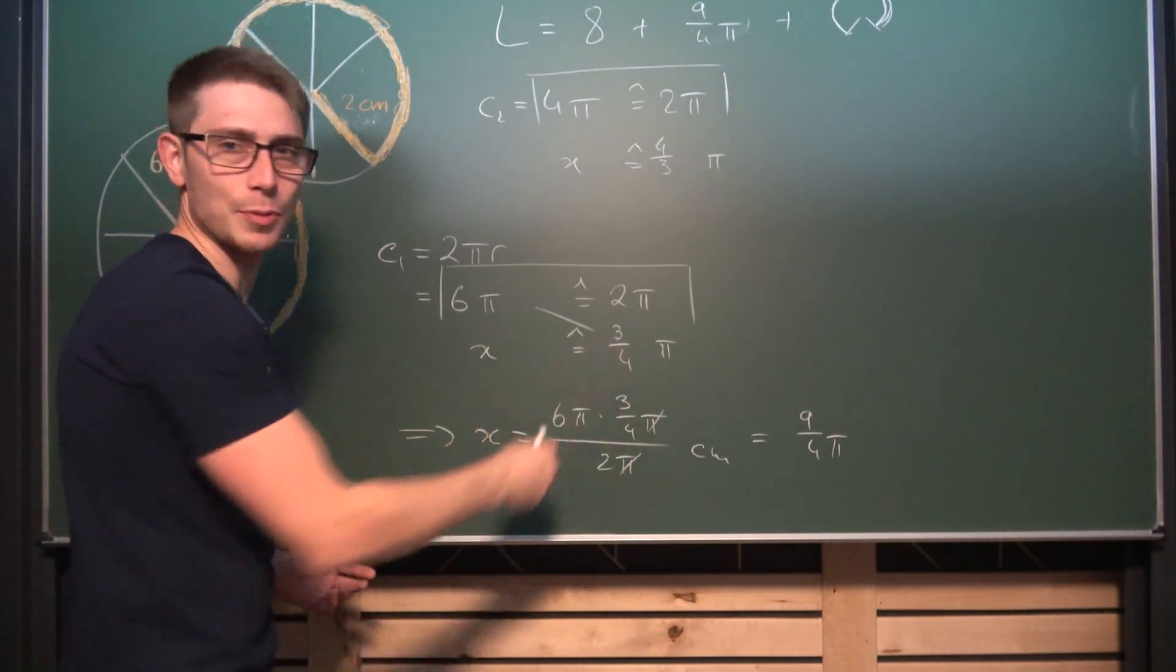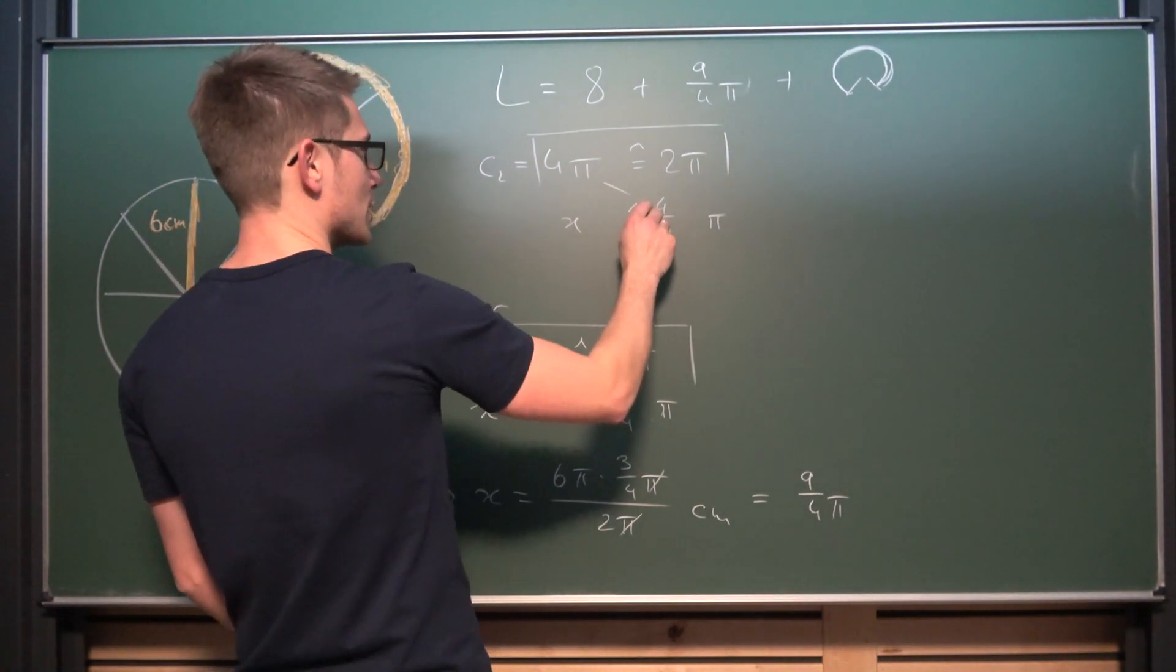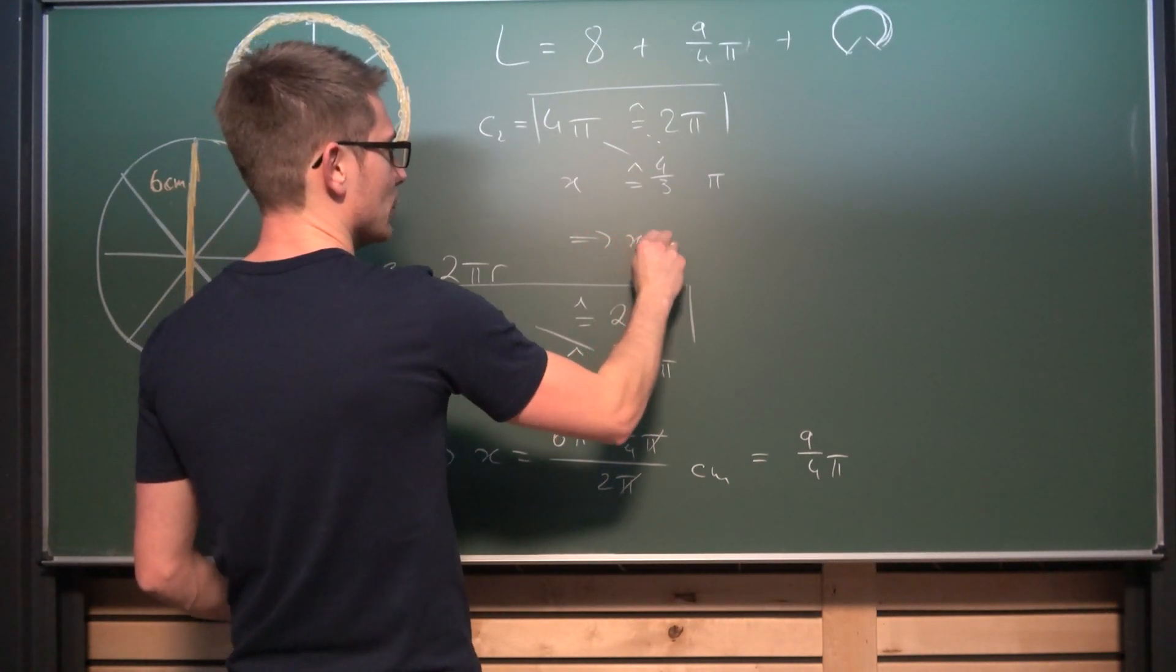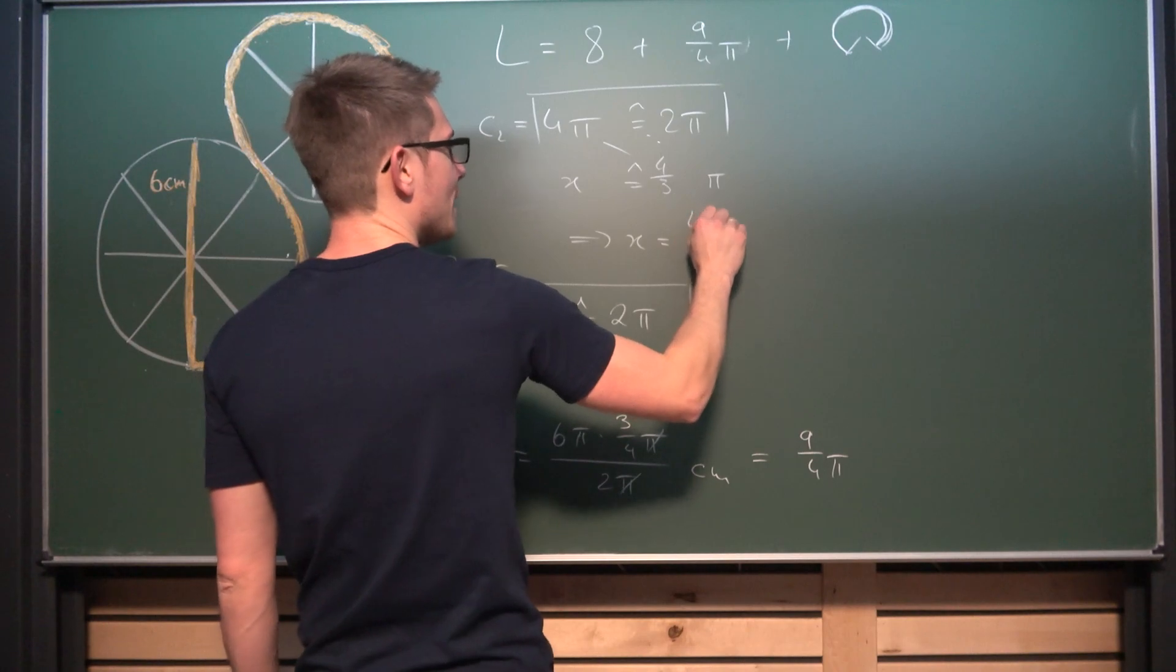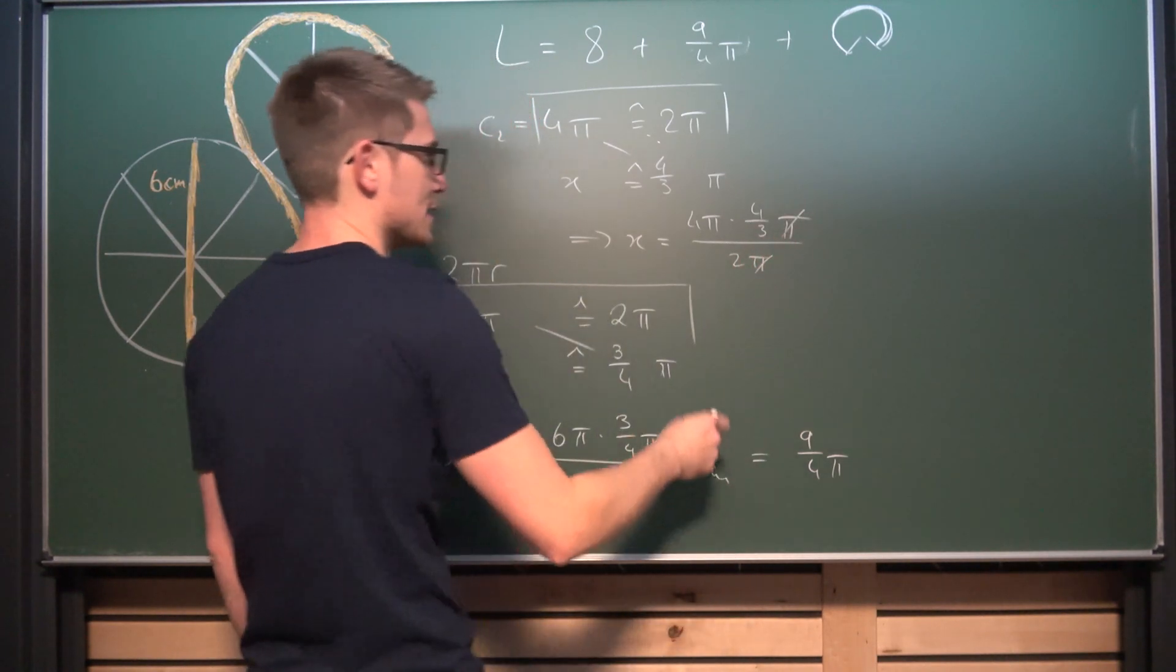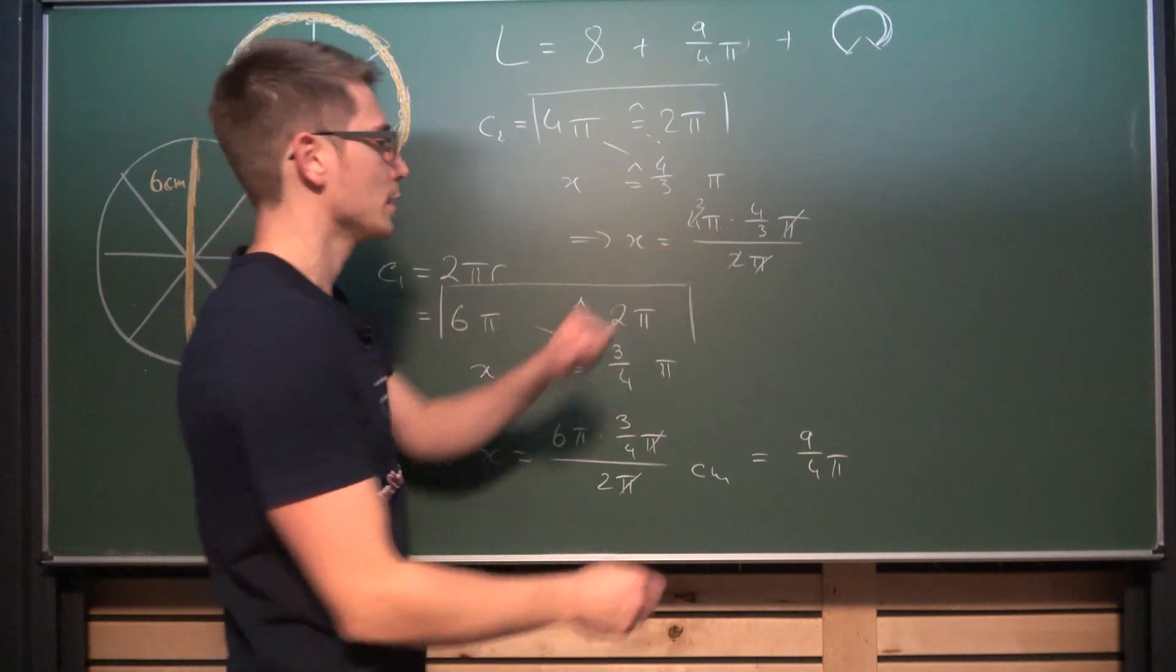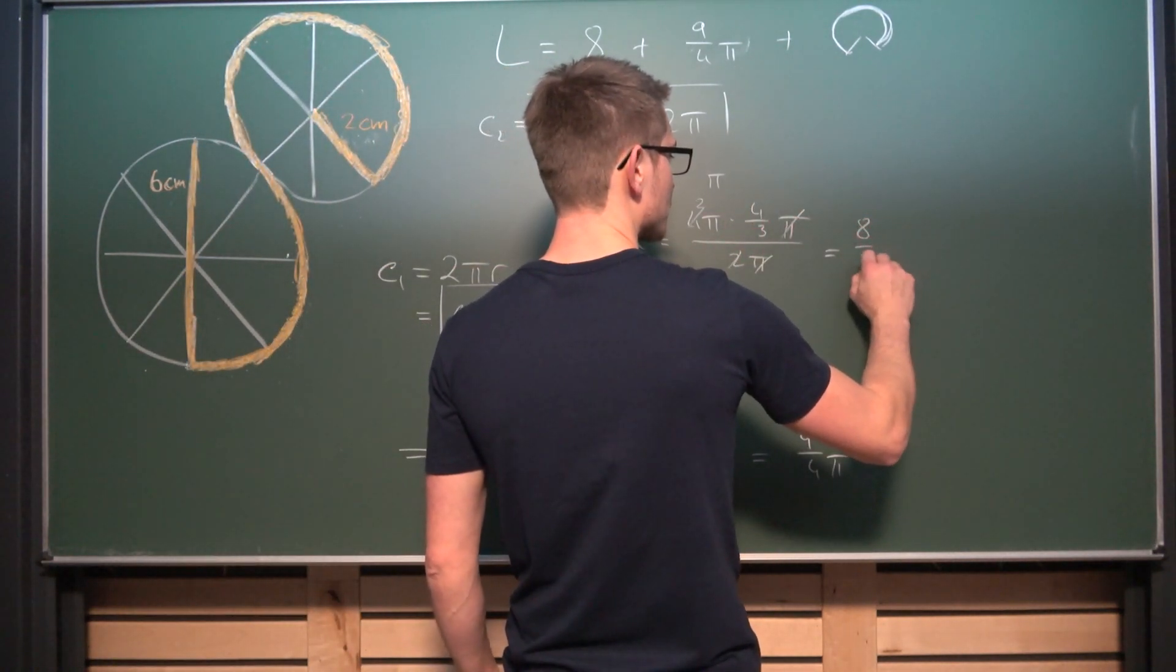And now we can once again multiply those two together and divide both by 2π, giving us that our last unknown is equal to 4π times 4 divided by 3π divided by 2π. π and π is gonna cancel out. And we got 4 and 2 giving us 2. Resulting overall in 8/3π.